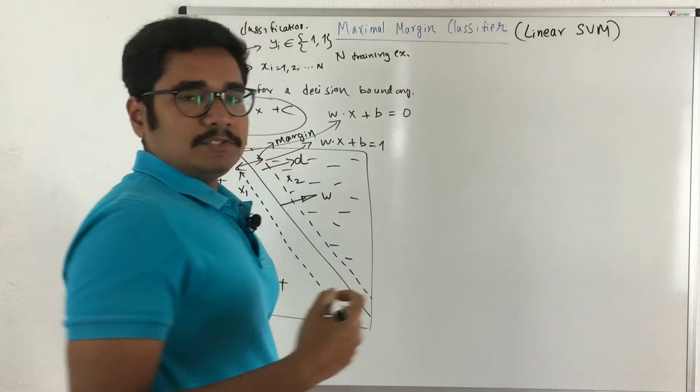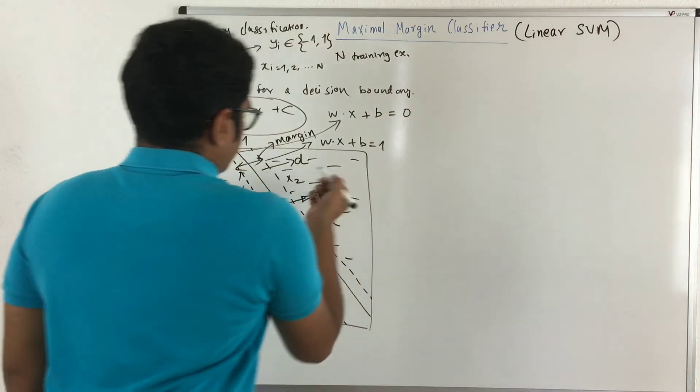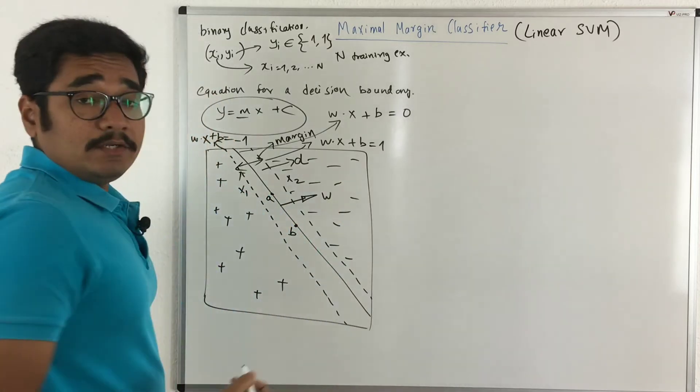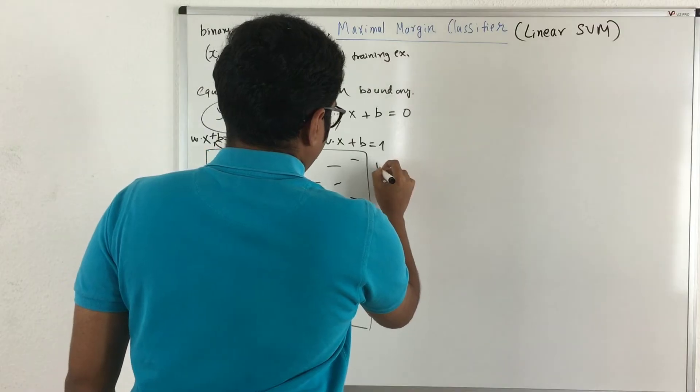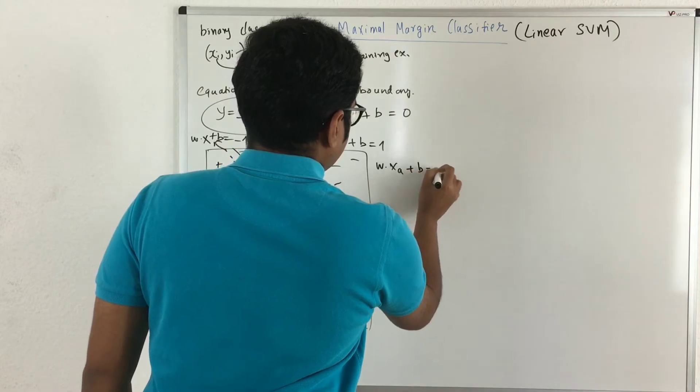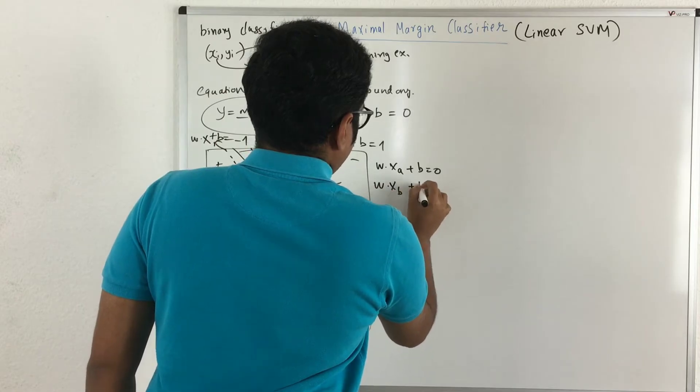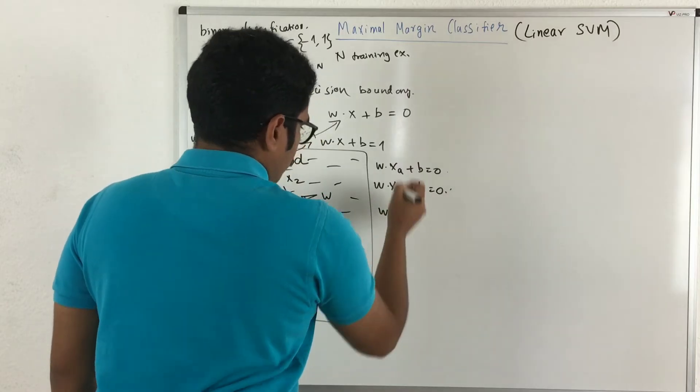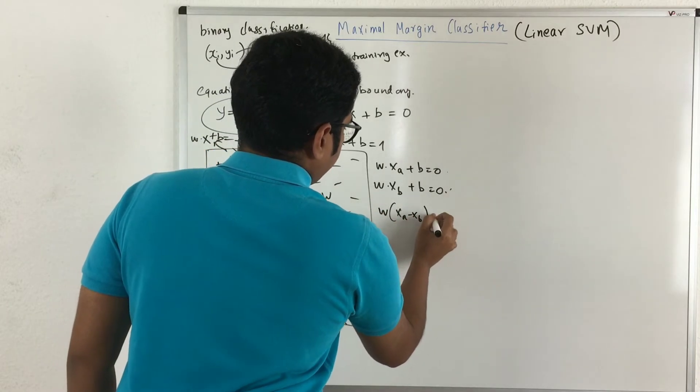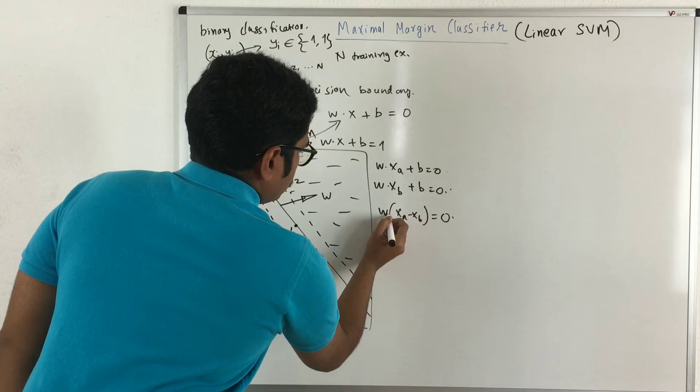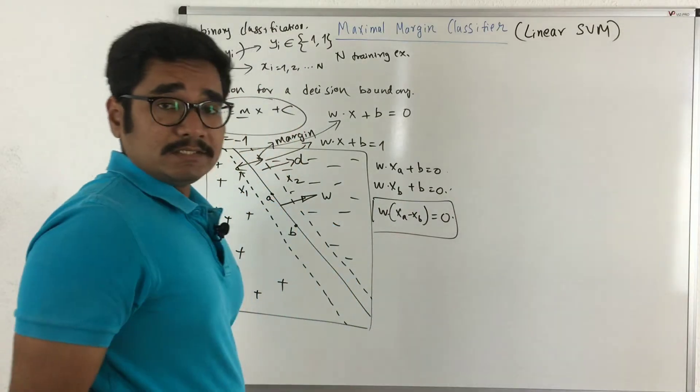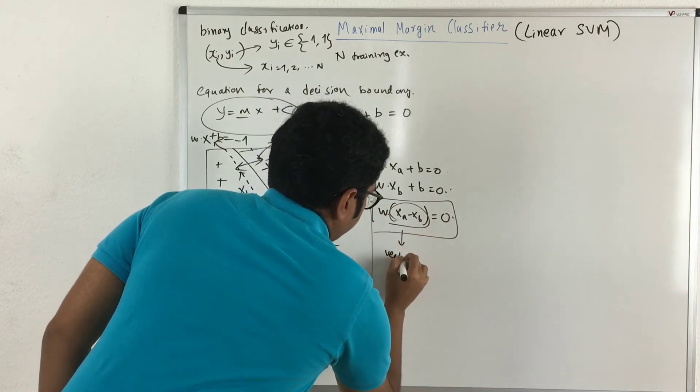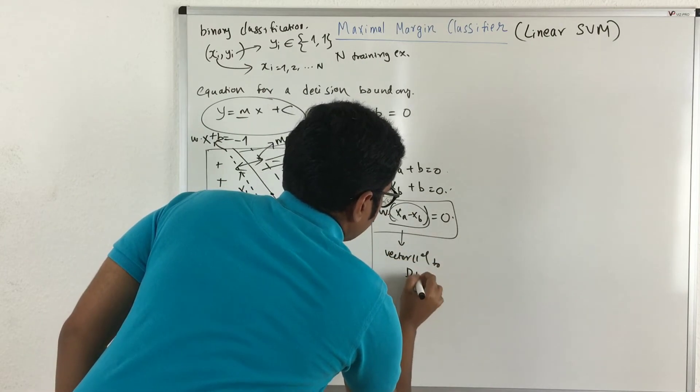So now let's do some linear algebra. For this we have, say for example, you have two points on this, just consider a and b. So if you try to write the equation in slope intercept form, what it will be like: W·Xa plus B equals 0 and W·Xb plus B equals 0. Now if you try to subtract this and this, your W common Xa minus Xb equals 0. So mind you, this is a dot product. So what this equation basically says is that this part is called a vector parallel to your decision boundary.